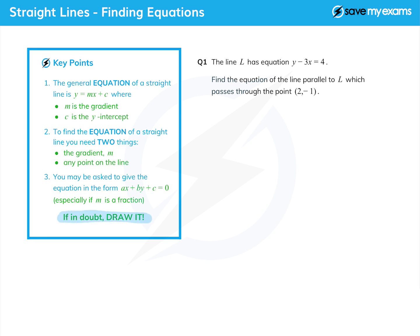Let's have a look at this first question. We're given the equation of a line l, and it's y minus 3x equals 4, so not quite in y equals mx plus c form, but we can put it there very easily. And we're asked to find the equation of the line parallel to l.